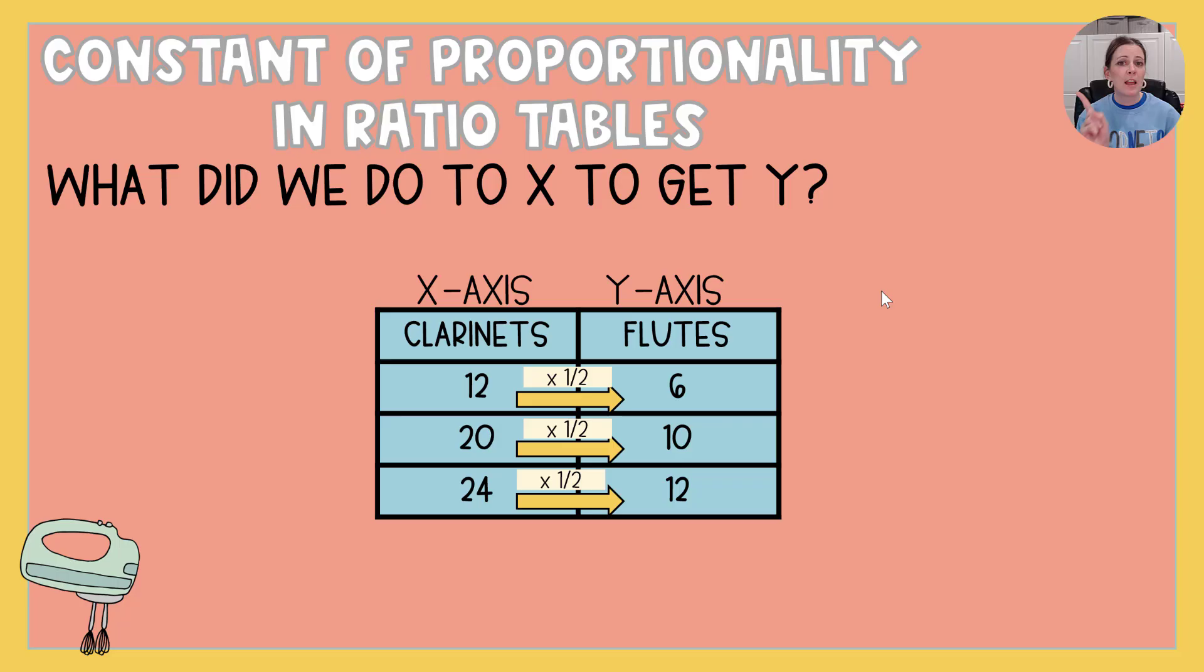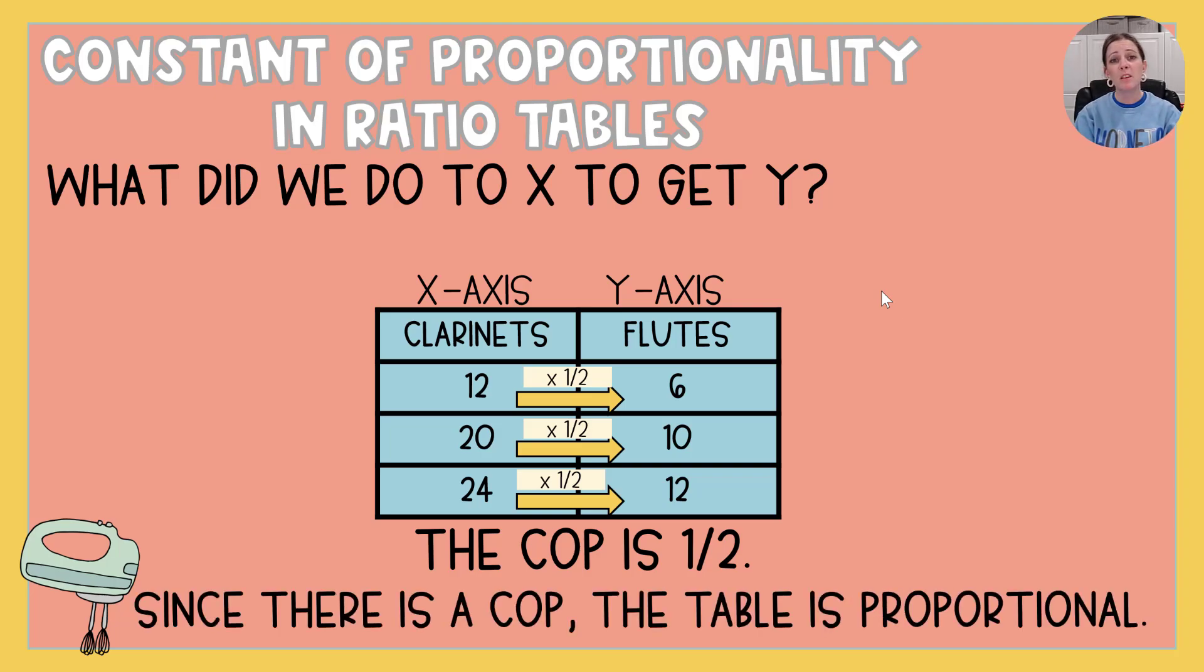Now you may have looked at that going the other way and you may have thought well six times two is twelve and ten times two is twenty. But remember the question up there is what do we do to x to get y? So it always moves left to right. Here, because I'm constantly multiplying by one half, that constant of proportionality is one half. And because there is a constant of proportionality, that tells me that this table of ratios is proportional. All of those are equivalent.